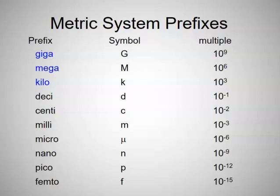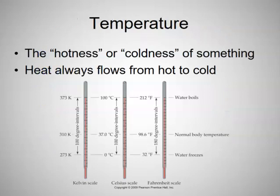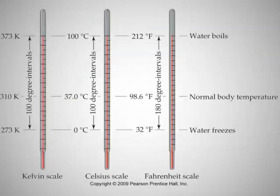All right, moving on from the metric system, let's talk about temperature. The temperature of something tells you how hot or cold it is, and heat always flows from hot to cold. It's just like a marble—if you have a marble on a smooth slope, it's always going to roll downhill. Heat always goes from hot to cold. Temperature is basically the measure of how much heat something has. The more heat an object has, the higher its temperature.